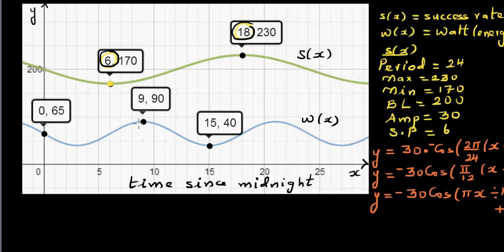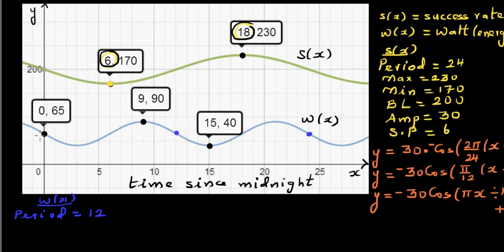Now we write the equation of the blue graph, W of X. What's the period? Look at half the period — from 9 a.m. to 3 p.m. is 6 hours. So one full period is 12 hours. Within 24 hours you get two full cycles, which you can see on the graph.